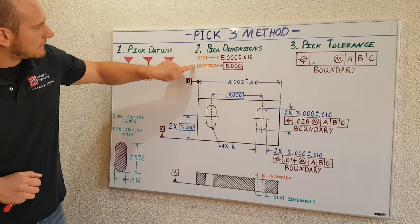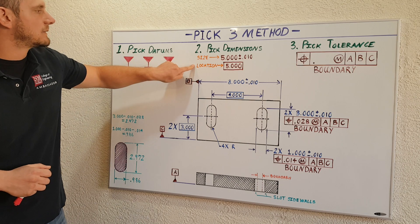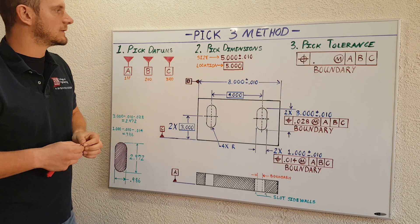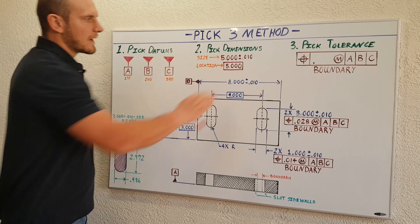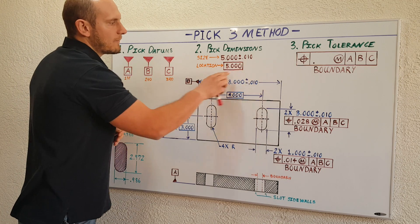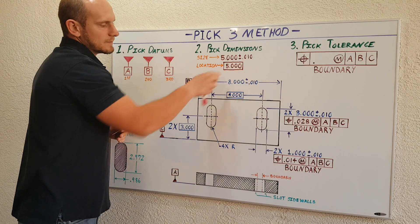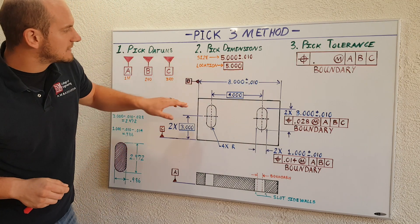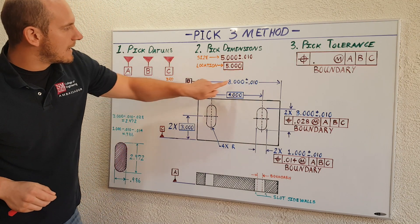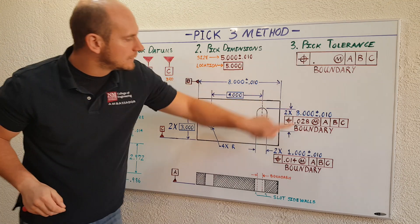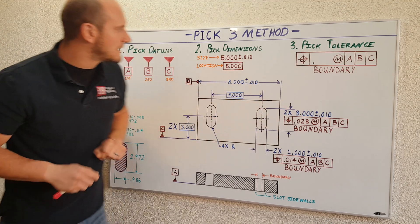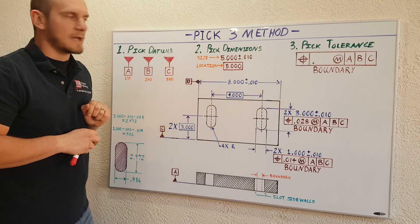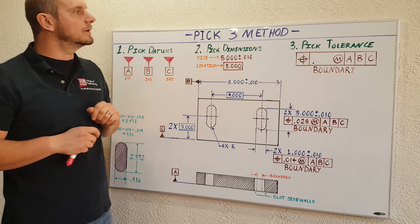Then we have location dimensions, which are our GD&T style dimensions — we drop our tolerance and then we box our dimension. In this example, I have one, two, three size dimensions, and I have one, two location dimensions.